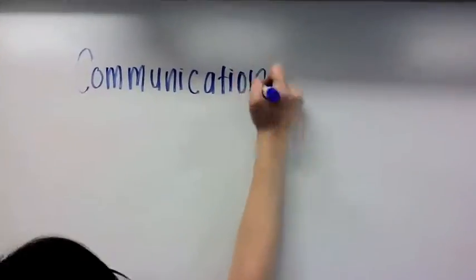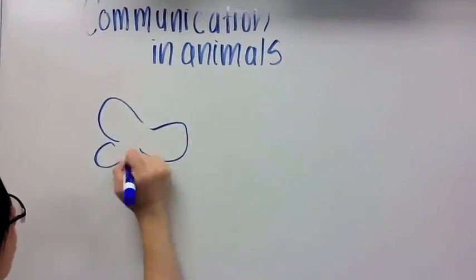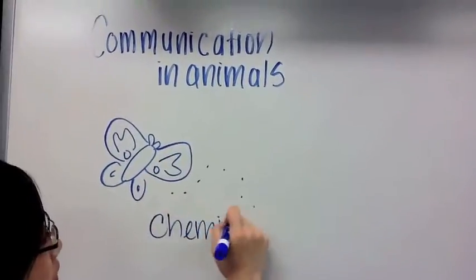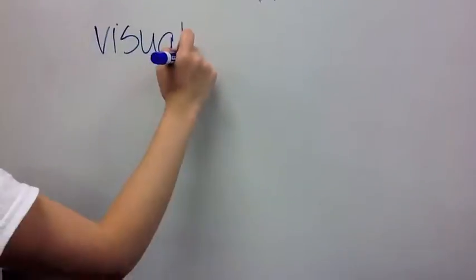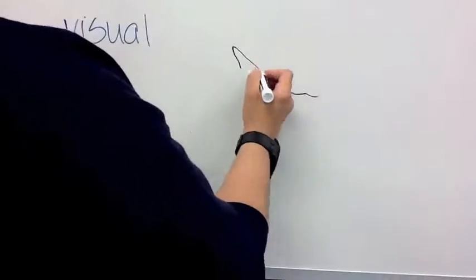Communication in animals include chemical, visual, and auditory. Chemicals used for communication are called pheromones. An example would be when a female moth attracts male moths by emitting release of hormones. They trigger behavior.